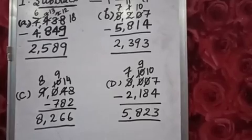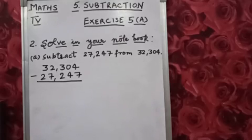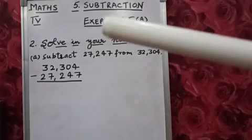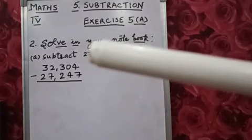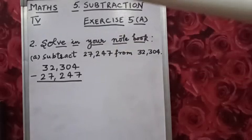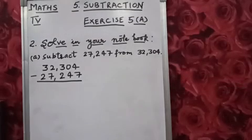Now students, let's see question number 2. Solve in your notebook. This question again involves subtraction. Question A is: subtract 27,247 from 32,304.